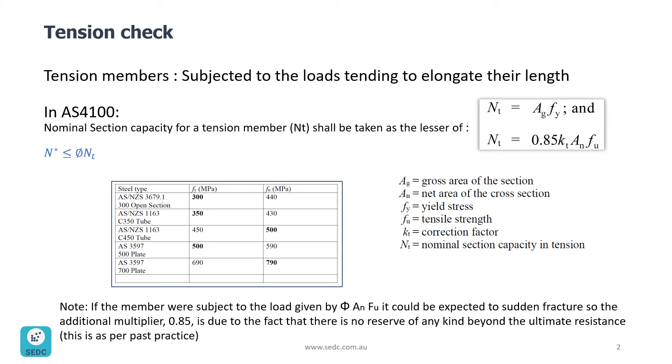In AS4100, nominal section capacity for a tension member NT shall be taken as the minimum of these two formulas.